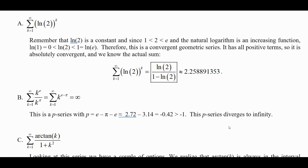The next one is the sum from k equals 1 to infinity of k to the pi power divided by k to the e power. According to the properties of exponents, this is k to the e minus pi power. This is a p-series with variable base k and constant power e minus pi. Since e is about 2.72 and pi is about 3.14, that difference is about negative 0.42, which is greater than negative 1, so this p-series diverges to infinity.